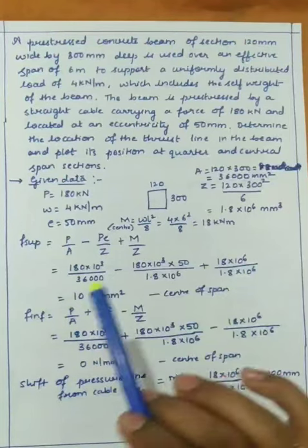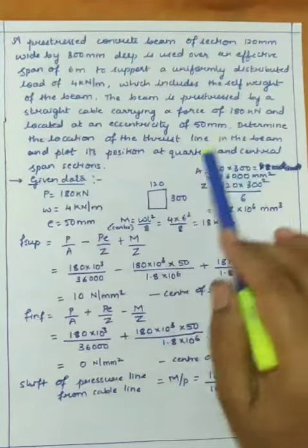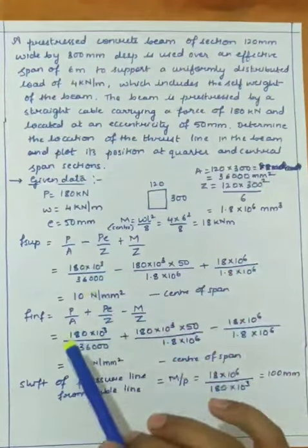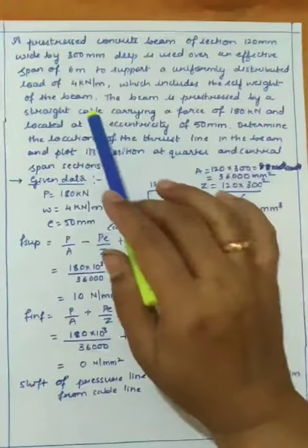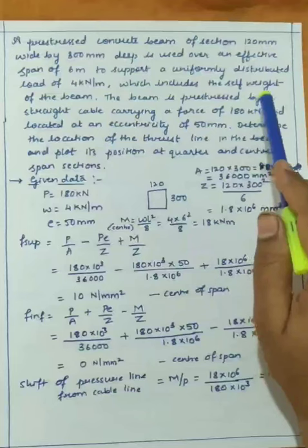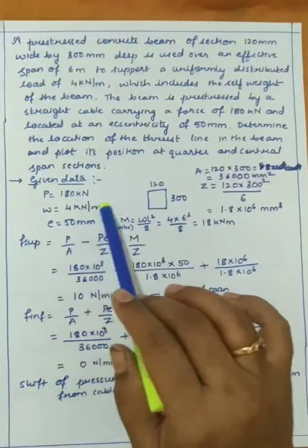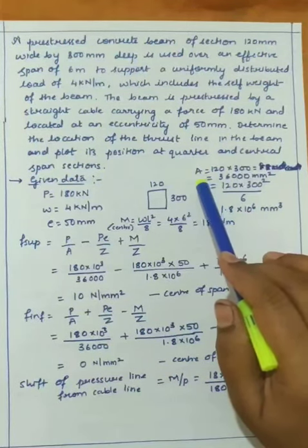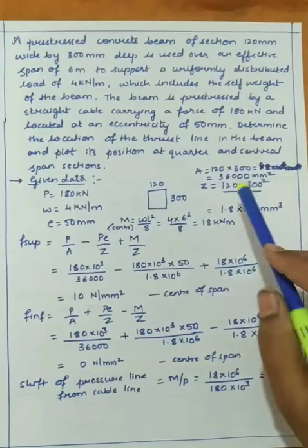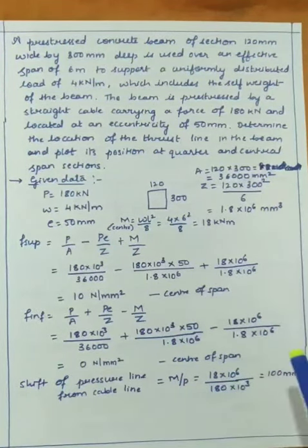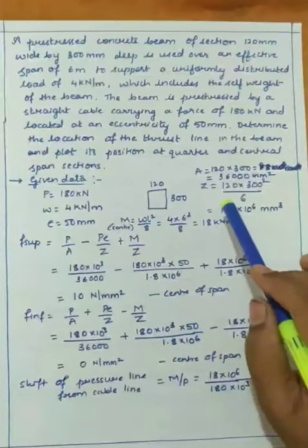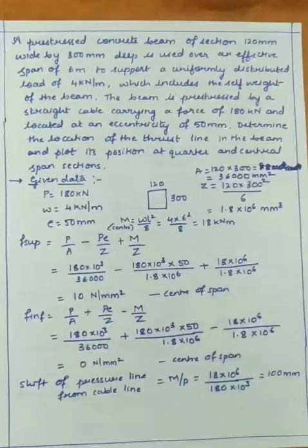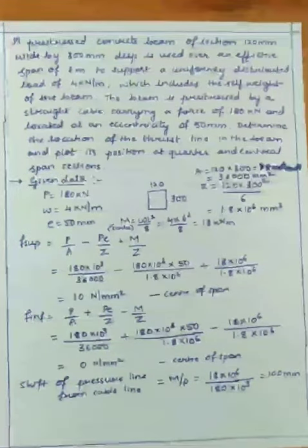Given data: rectangular section 120 by 300 mm. Prestressing force P = 180 kN. UDL W = 4 kN/m, which includes self-weight. Eccentricity e = 50 mm. Area = 120 × 300 = 36,000 mm². Section modulus Z = BD²/6 = 120 × 300² / 6 = 1.8 × 10⁶ mm³.